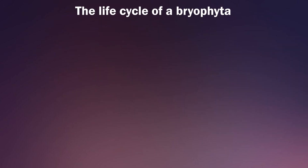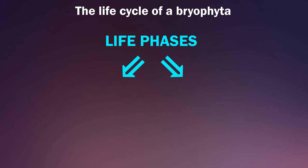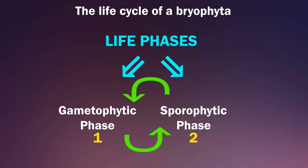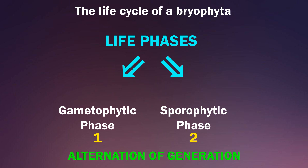Let's see the life cycle of a bryophyte. There are two life phases of bryophytes: one is the gametophytic phase, and the other one is the sporophytic phase. These two phases alternate with each other, meaning they come one after the other. Such alternation is also called alternation of generation.